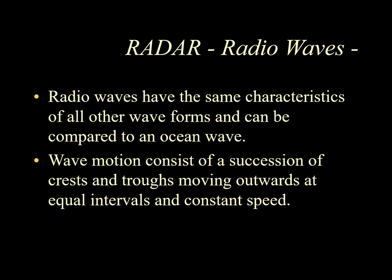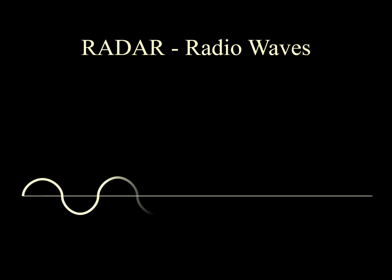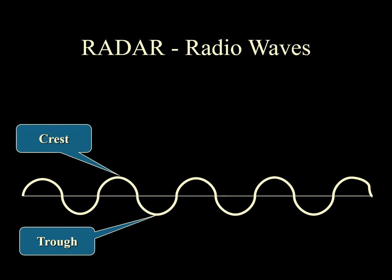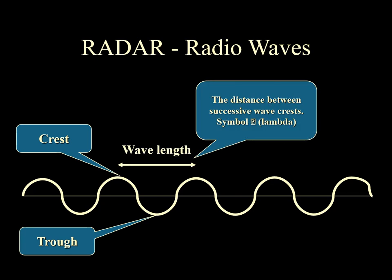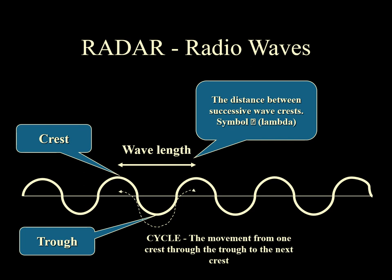The radio wave has the same characteristics as all other wave forms, so a comparison with ocean waves can be made. The wave motion consists of a succession of crests and troughs moving outwards at equal intervals and at constant speed. Looking at the figure on screen, you can comprehend what I mean by crests and troughs. The wavelength is the distance between successive wave crests, symbolized by lambda. The cycle is the movement of one crest through the trough to the next crest.